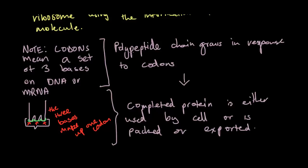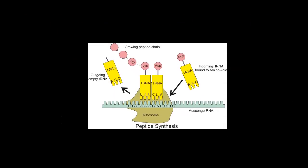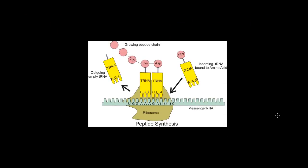Okay, so polypeptide chain grows in response to codons, and altogether at the end, you've got the completed protein, which is either used up by the cell or is packed and exported. Okay, so let's go down to this. Hopefully this makes it a lot clearer for you.